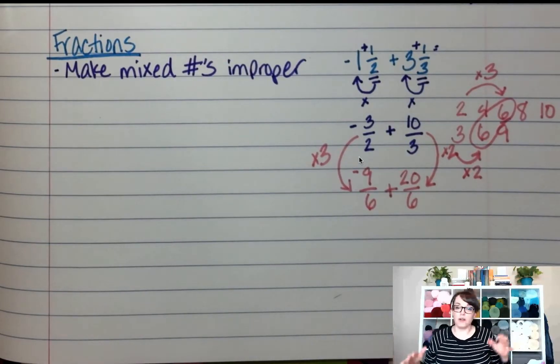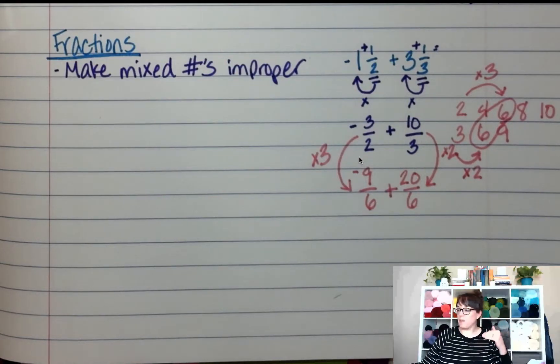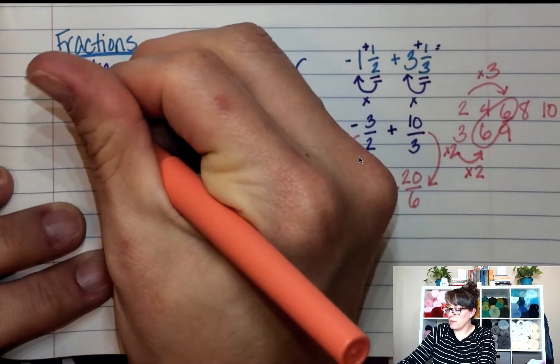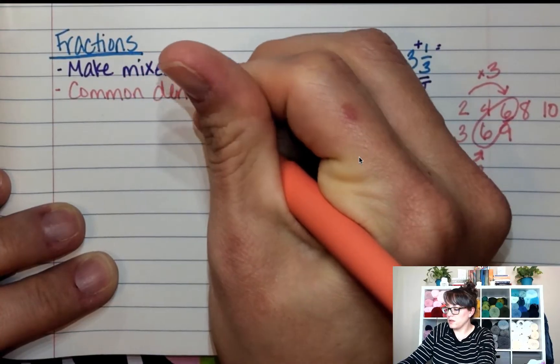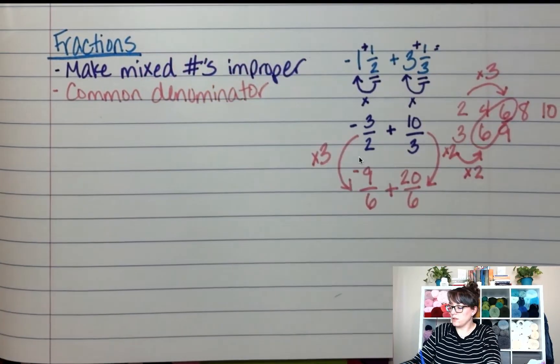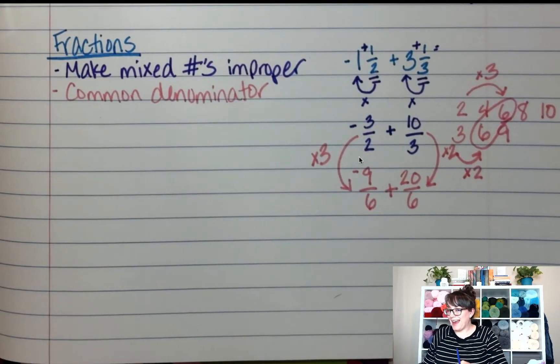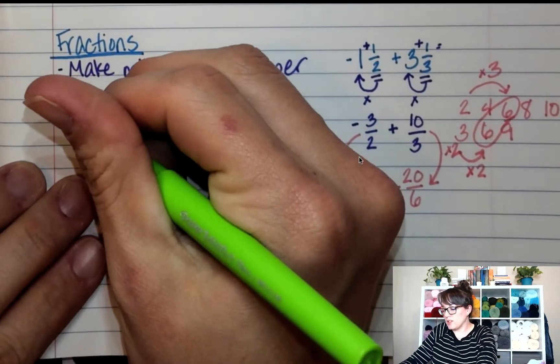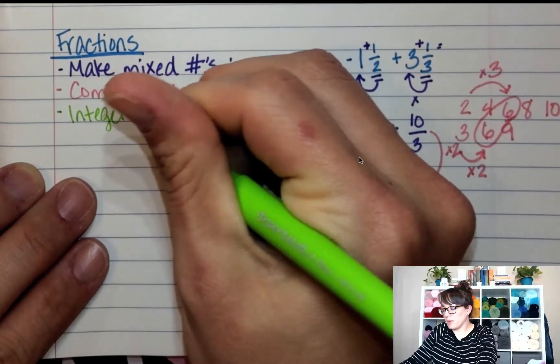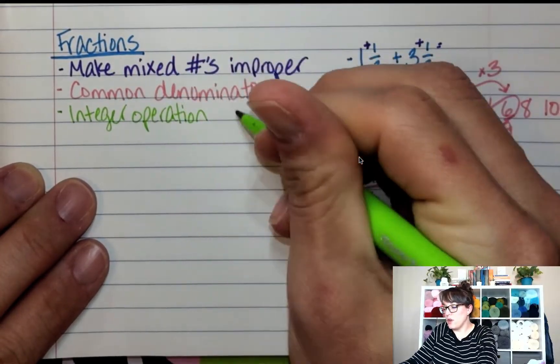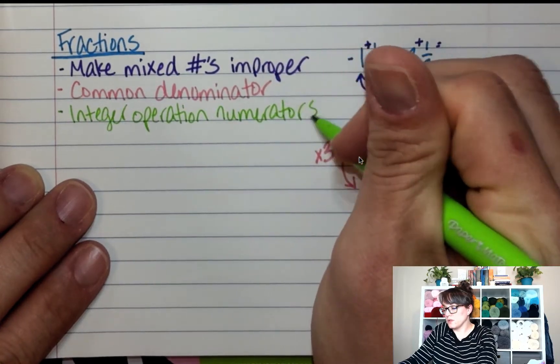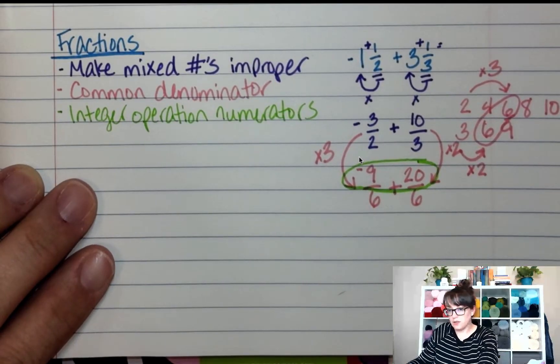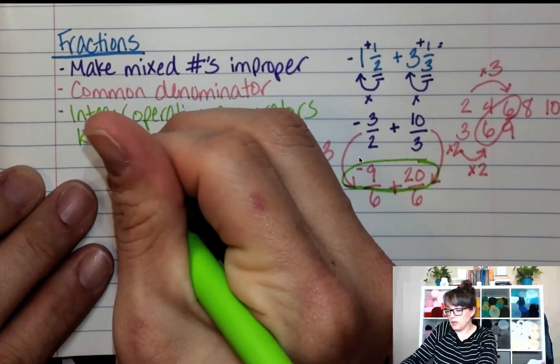Now that we have a common denominator, we look at the numerators only. The denominator is going to stay the same. We found a common denominator. And the next thing I'm going to do, I'm going to add these like they're integers. We're going to integer operation the numerators. So I've got negative nine plus twenty. And we keep the denominator.